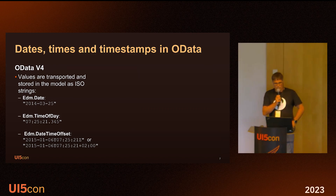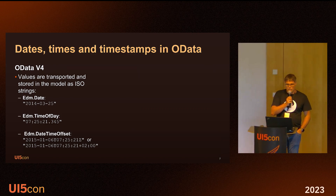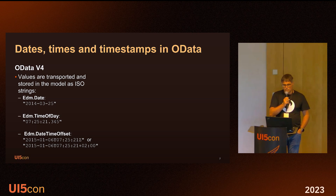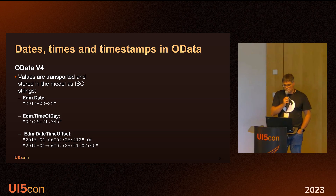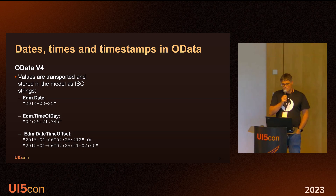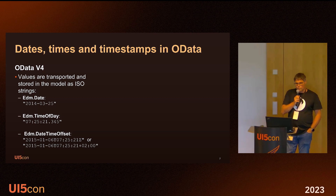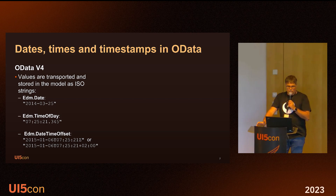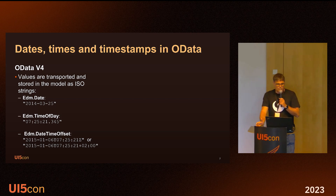How are they handled in the OData models? In OData v4, values are transported and stored as ISO strings. The Edm.Date, for example, is stored as four-digit year, two-digit month, two-digit day — there is no time zone information. The same is true for times. Only the DateTimeOffset, which is used for timestamps, contains a date part, a time part, and time zone information.